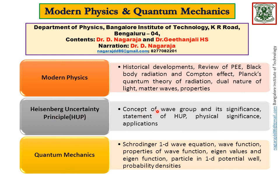Next Heisenberg uncertainty principle, concept of wave group and its significance, statement of uncertainty principle, significance of the principle and applications, quantum mechanics, setting up of Schrodinger one dimensional wave equation, wave function and properties of wave function, eigenvalues and eigenfunctions, particle in one dimensional potential well and then probability densities.